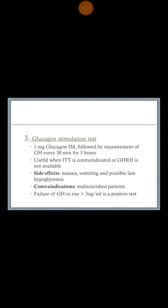The glucagon stimulation test is used to assess growth hormone deficiency. Basically, what you do in this test is inject the patient 1 mg of glucagon intramuscularly, followed by a measurement of growth hormone every 30 minutes for three hours.